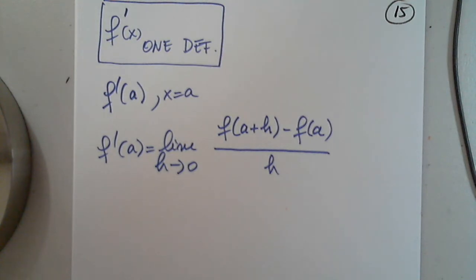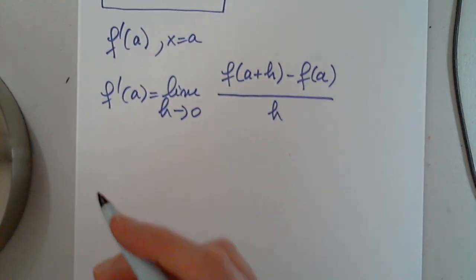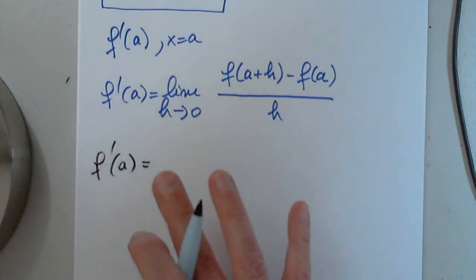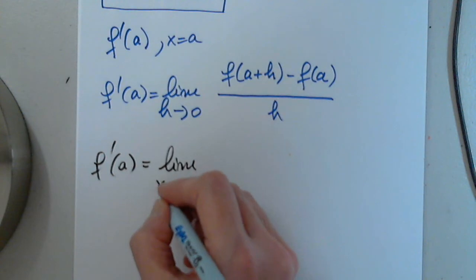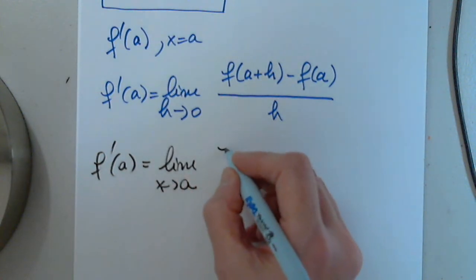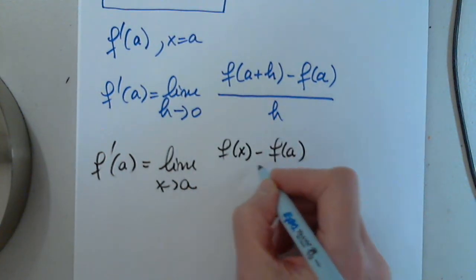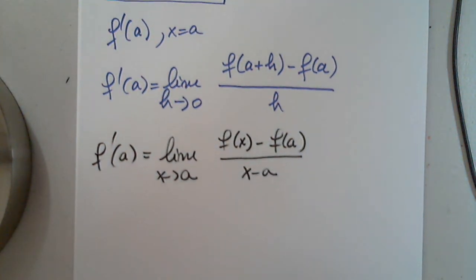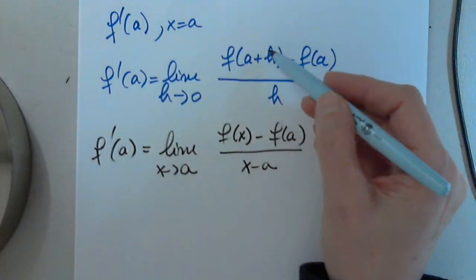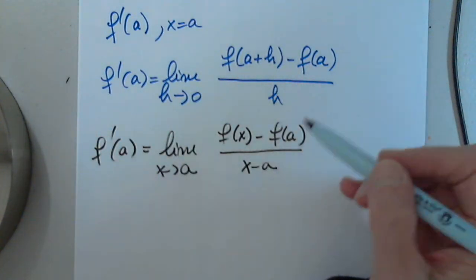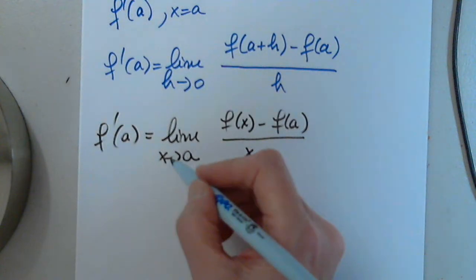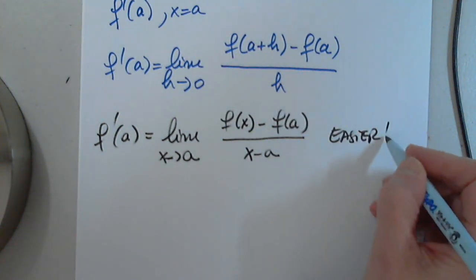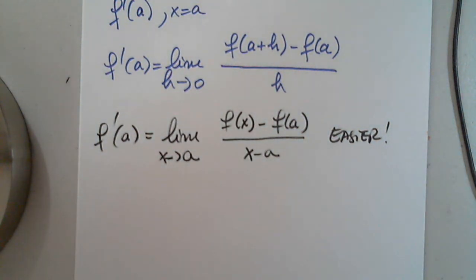The second definition, I think in several situations, I cannot give a recipe though, is more useful. Its limit as x approaches a from f of x minus f of a over x minus a. Pretty much the same thing. So this is the x and this is the a. Same thing. There is no h here. Sometimes this definition is easier to work with for certain functions. Sometimes. Thank you.